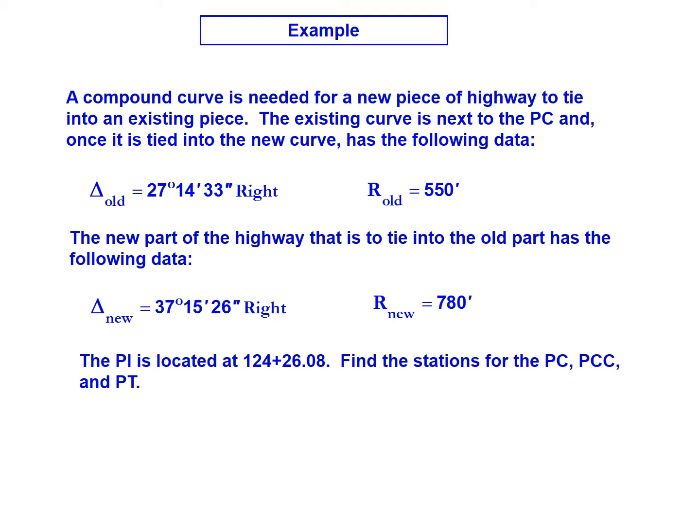This is an example problem for a compound curve. We're told that we have a compound curve that's needed for a new piece of highway to tie into an existing piece. We know that the existing curve is next to the PC, and once it's tied into the new curve, we'll have the following characteristics.